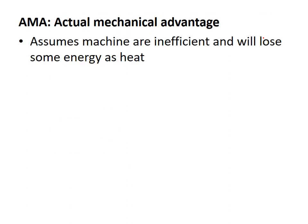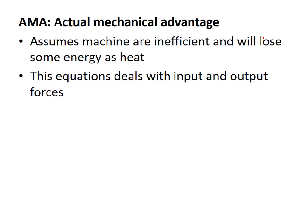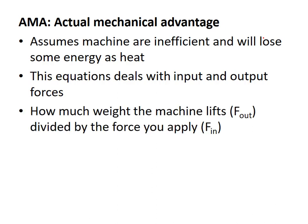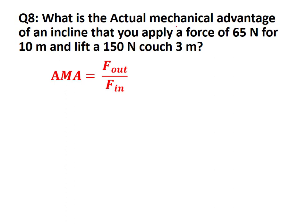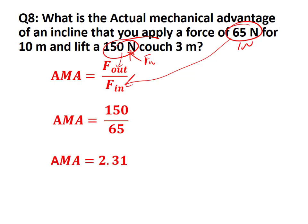Actual mechanical advantage assumes machines are inefficient and will lose energy as heat. AMA = force_out / force_in. For example, if you push with 65 N and the output force (weight of object) is 150 N, then AMA = 150 / 65 = 2.31. This means your job is 2.31 times easier than lifting the 150 N couch directly.